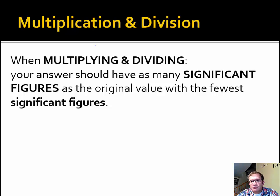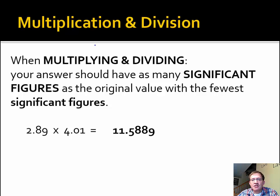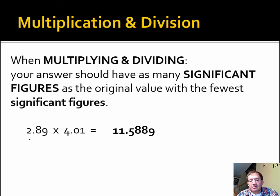When multiplying and dividing, your answer should be rounded so that it has as many significant figures as the original value with the fewest. For example, if we have 2.89 times 4.01, we punch that into our calculator and get 11.5889 — great and really precise. But because 2.89 has just three significant figures, and 4.01 also has just three significant figures, our answer may also have only three significant figures. The decimal point is present in each value, so I count from left to right: one, two, three significant figures each.